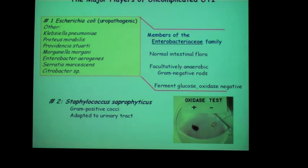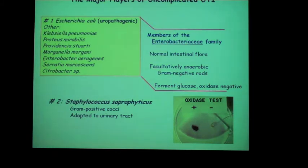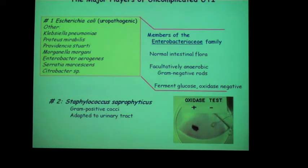The major players in uncomplicated UTI are bowel flora. The biggest group of non-anaerobic, facultatively anaerobic bacteria in the gut are the Enterobacteriaceae family, and of those, E. coli is the number one member of the intestine and the most common cause of uncomplicated UTI. Other Enterobacteriaceae species also appear on lab reports. The second most common cause is the gram-positive organism Staphylococcus saprophyticus, which is adapted to the urinary tract. The oxidase test is used to help identify members of the Enterobacteriaceae; they are oxidase-negative, compared to Pseudomonas, which is oxidase-positive.